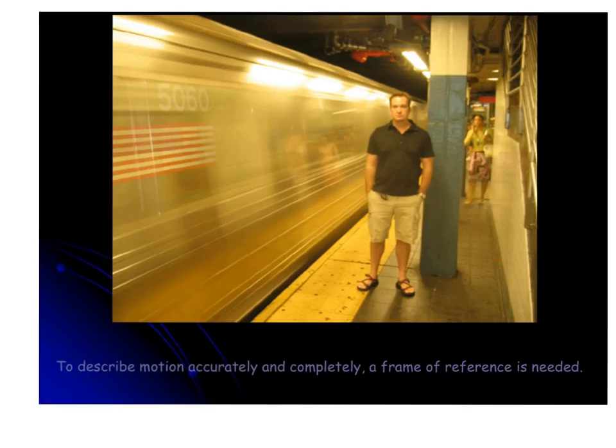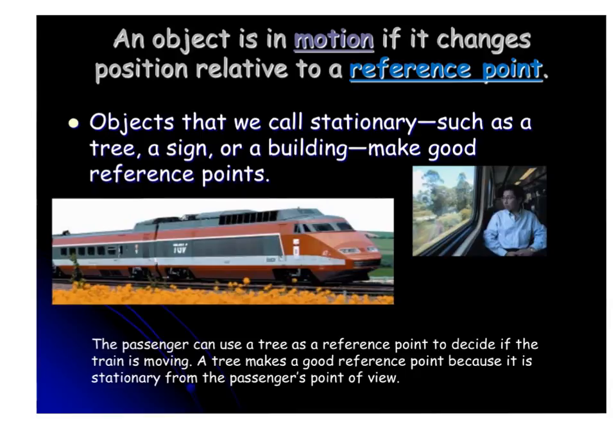Let's start with talking about frame of reference. To describe motion accurately and completely, you need to know what your frame of reference is first. An object is in motion if it changes position relative to a reference point. A good reference point is something that stays stationary, like maybe a sign, a tree, or a building. Something that's not actually moving is the best type of reference point.